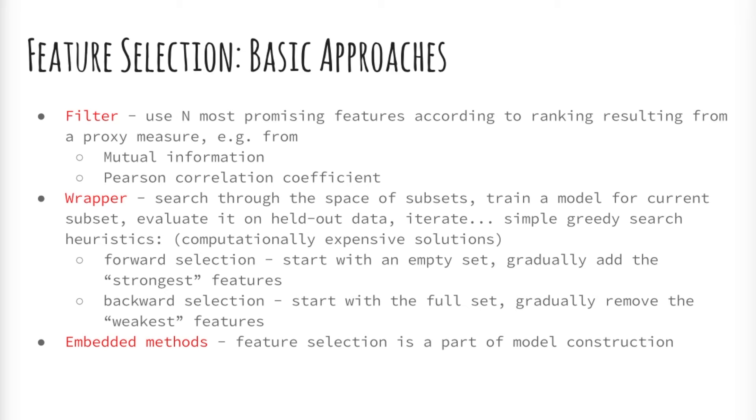The third class of feature selection algorithms are embedded methods. Embedded methods learn which features best contribute to the accuracy of the model while the model is being created. The most common type of embedded feature selection methods are regularization methods. Regularization methods are also called penalization methods that introduce additional constraints into the optimization of a predictive algorithm, such as a regression algorithm that bias the model towards lower complexity, fewer coefficients. Examples of regularization algorithms are the lasso, elastic net, and ridge regression.